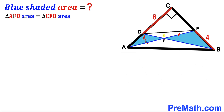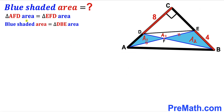The area of triangle EFD is going to be A₁ as well. Now let's assume the area of triangle BFE is A₂. So therefore it is sufficient to say that the blue shaded region area is going to be equal to the area of triangle DBE.